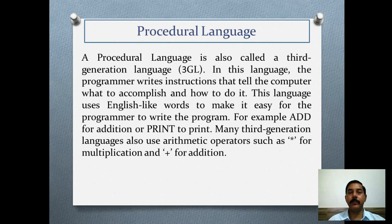A procedural language is also called a third generation language, or 3GL. In this language, the programmer writes instructions that tell the computer what to accomplish and how to do it. This language uses English-like words to make it easy for the programmer to write the program — for example, 'add' for addition or 'print' to print. Many third generation languages also use arithmetic operators such as star for multiplication and plus for addition.